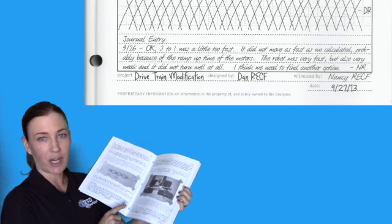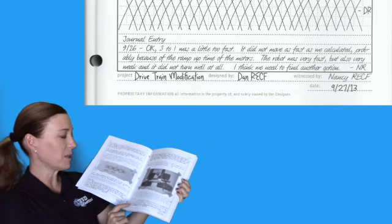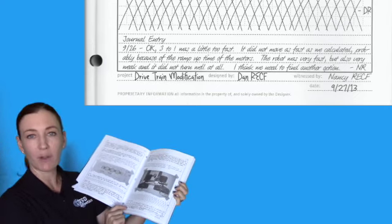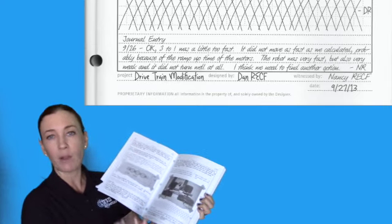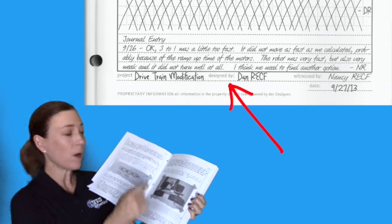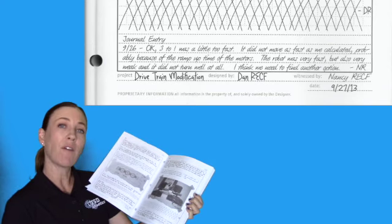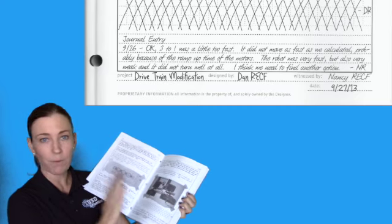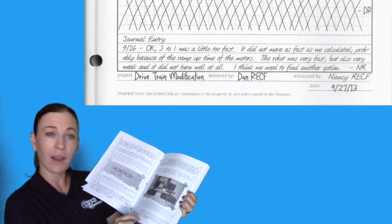Let's take a look at the bottom of the page. You will notice there's a spot for project — this is the summary of the portion of the design process you're in right now. This one says drivetrain modification, so obviously they're modifying the drivetrain on this page. Then it says design by — this is who created this page or made the entries in the notebook. If you have multiple team members creating entries, use the person who finished the page, did the last entry, cleaned it up, and put their name.